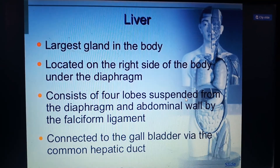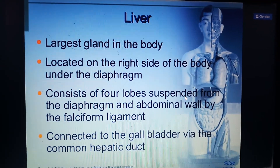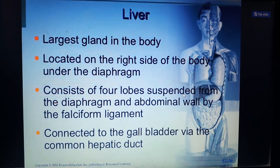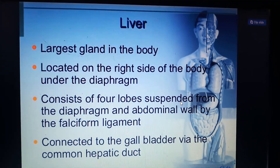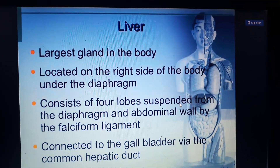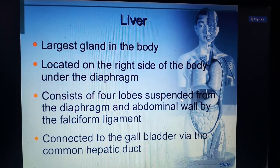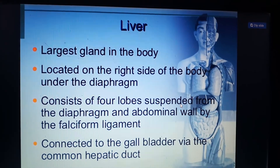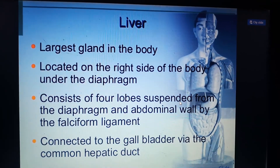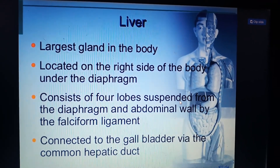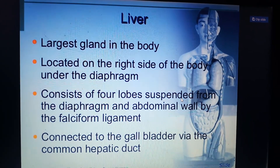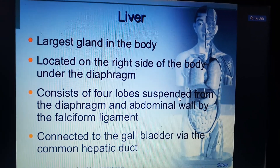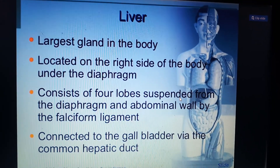Hi guys, now we are going to see about the importance of the liver as a part of the digestive system. The liver, known as the largest gland in the body, is located on the right side of the body under the diaphragm. It consists of four lobes, suspended from the diaphragm and abdominal wall by the falciform ligament, and is connected to the gallbladder via the common hepatic duct.